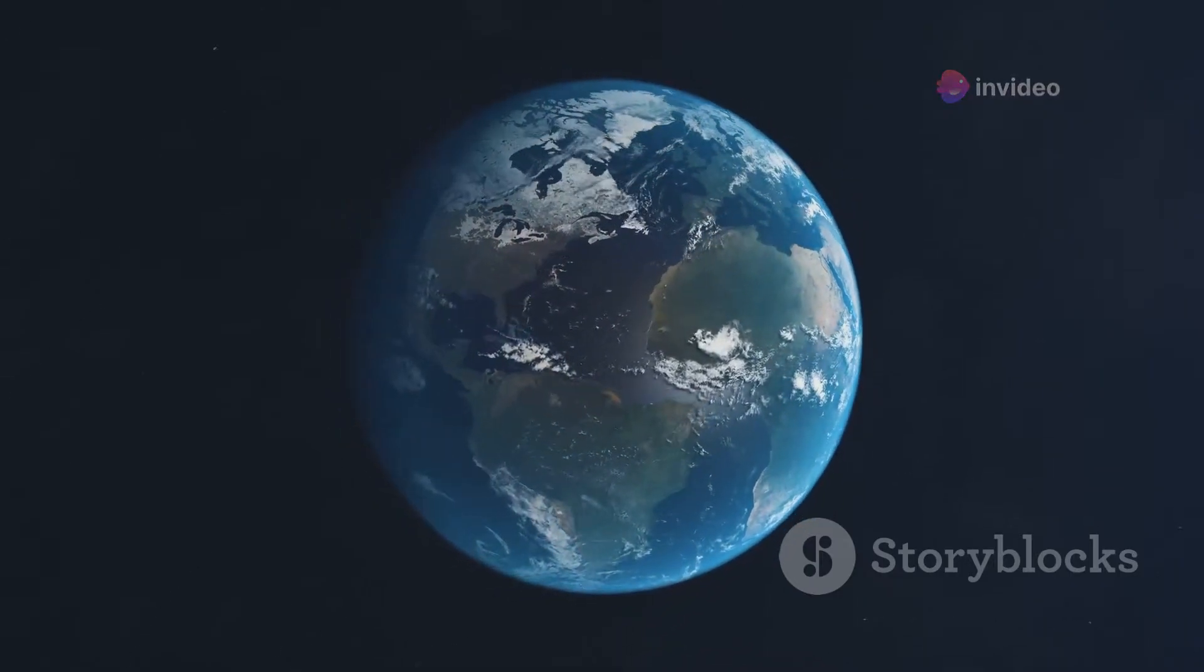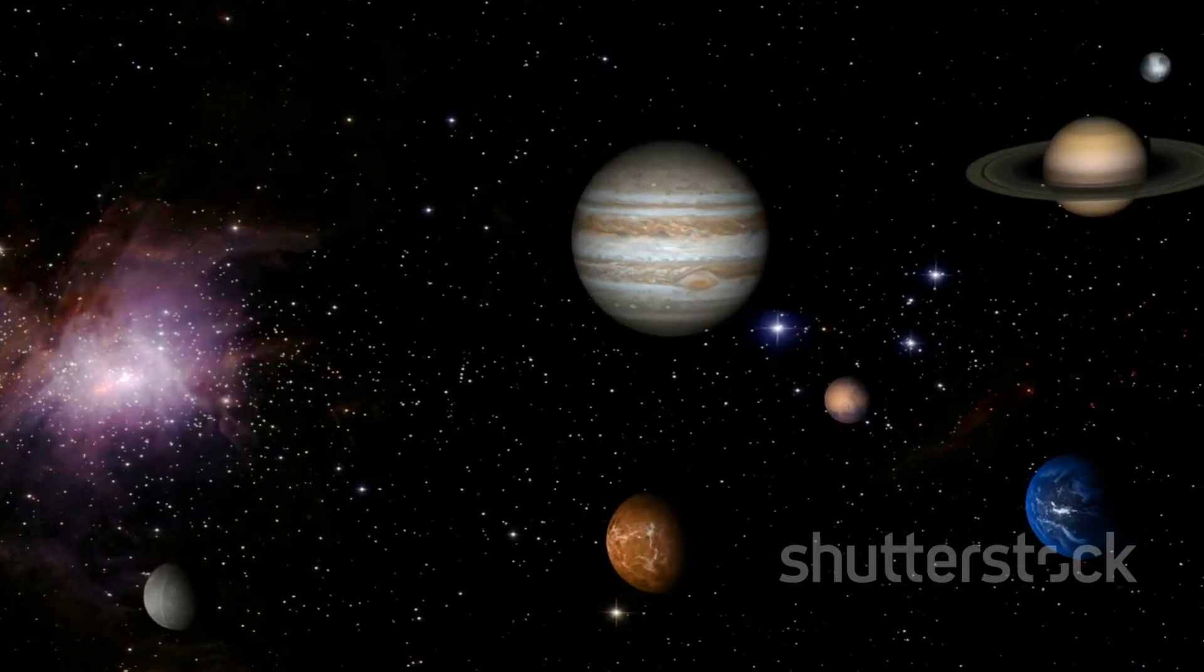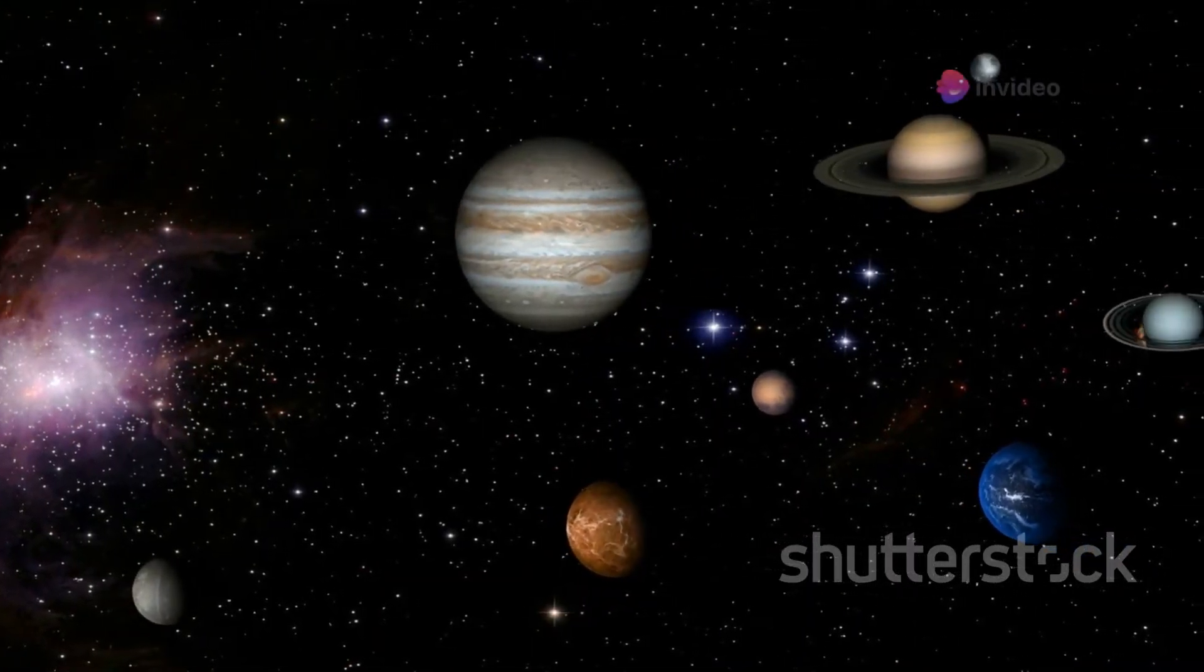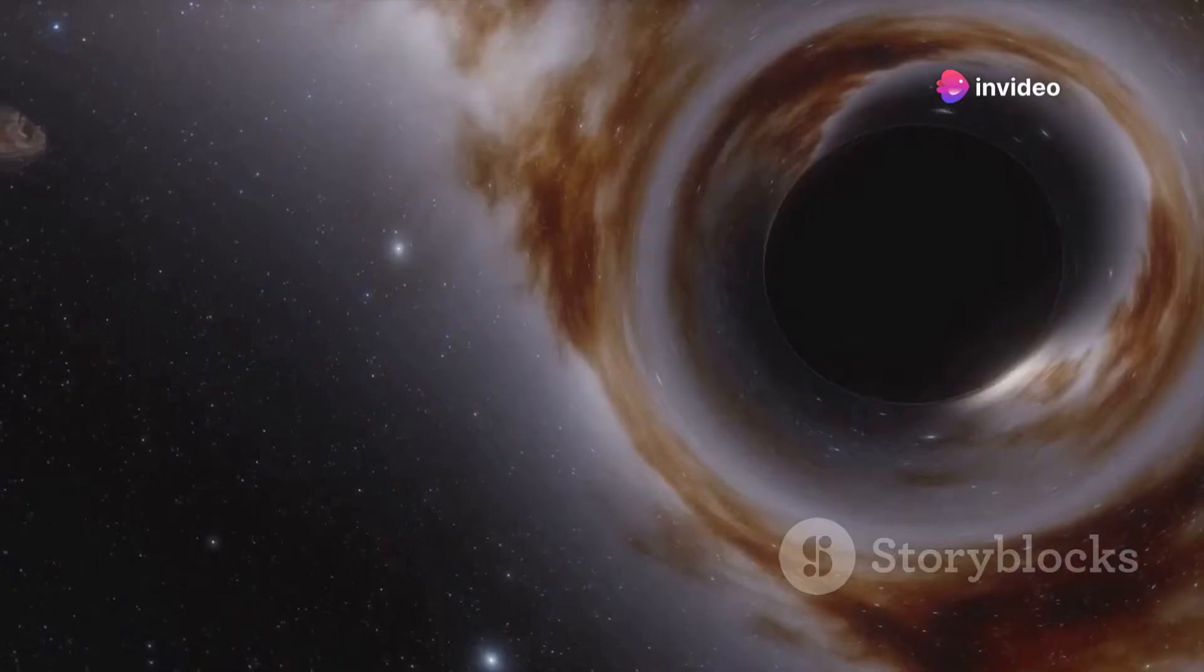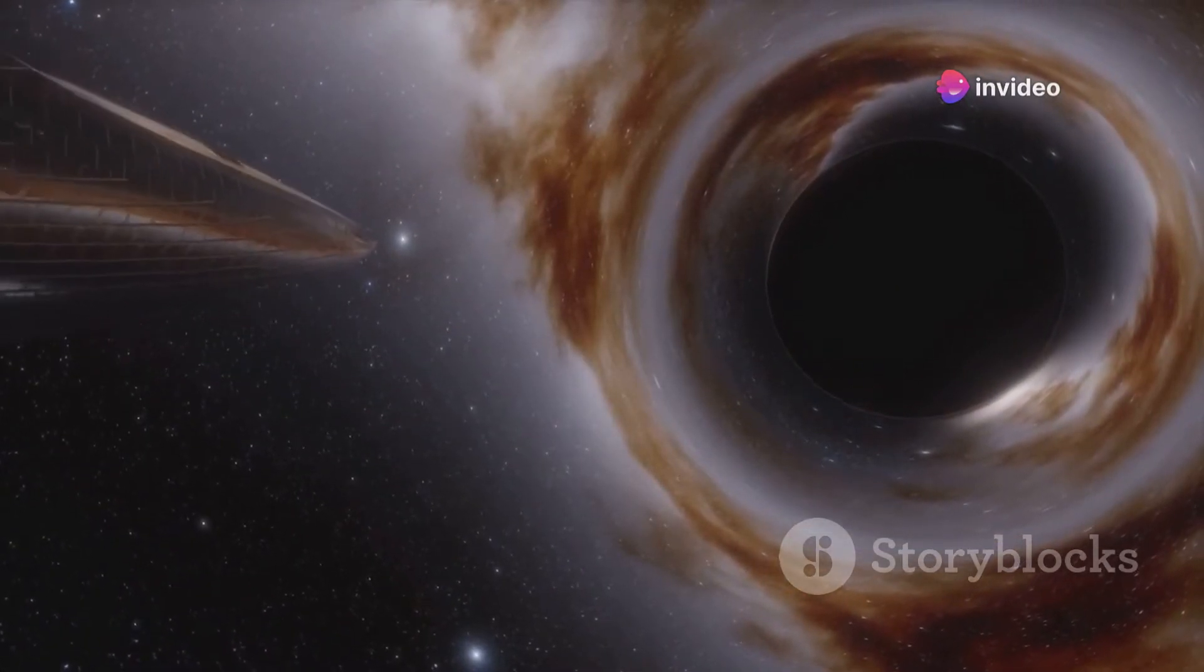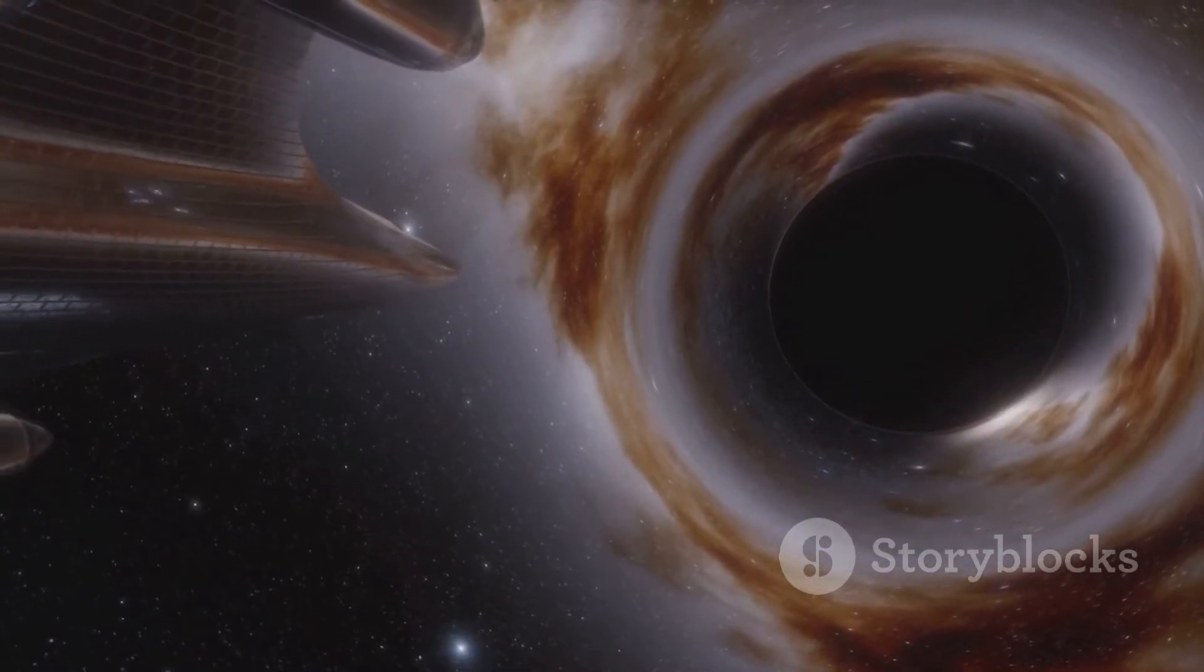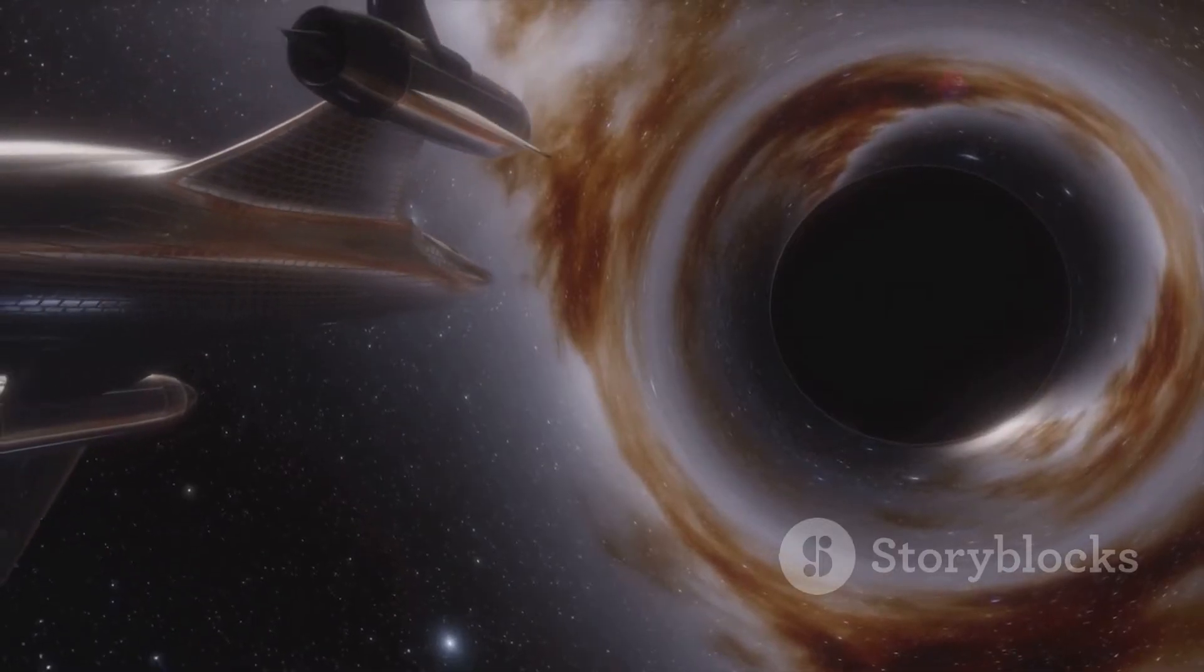Expanding our view to the cosmos, Earth's enhanced gravity would not exist in isolation. This new gravitational Titan would tug more forcefully on the Moon and even influence the Sun itself. Earth's orbit could decay, spiraling it closer to the Sun, or it might disrupt the orbits of other planets, leading to a domino effect of gravitational chaos throughout the solar system.